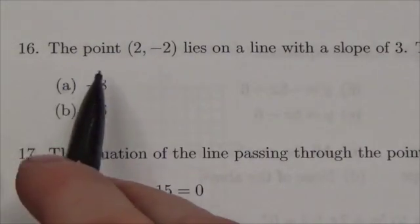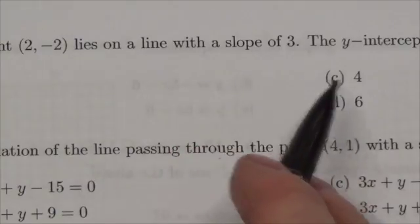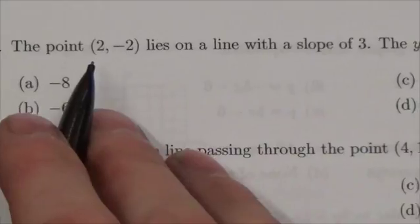Hi everyone, this question says that the point (2, -2) lies on a line with a slope of 3, and it's asking for the y-intercept. Let's build this equation.